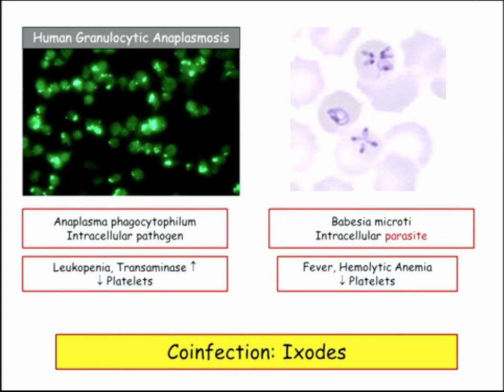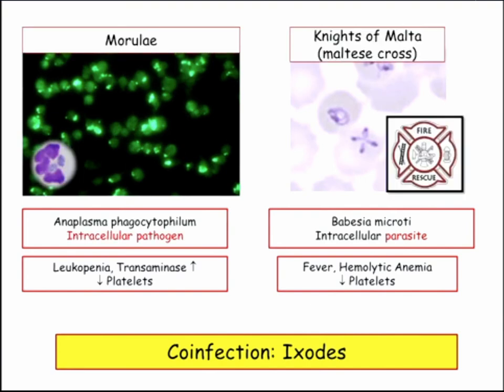The other one — Babesia — is also an intracellular parasite. They present pretty similarly, but it's a hemolytic anemia with the classic Maltese cross.